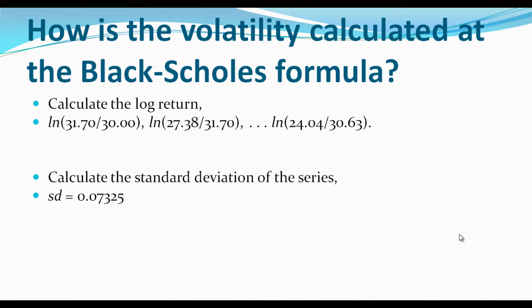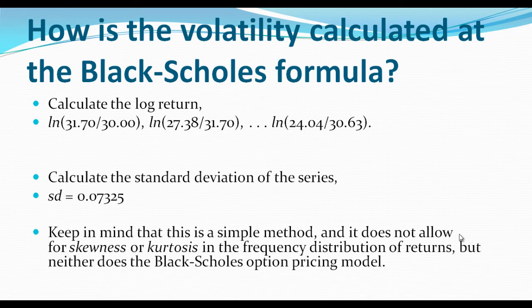Of the series, that is, it will come out to 0.07325. Keep in mind that this is a simple method and it does not allow for skewness or kurtosis in the frequency distribution of returns, but neither does the Black-Scholes option pricing model.